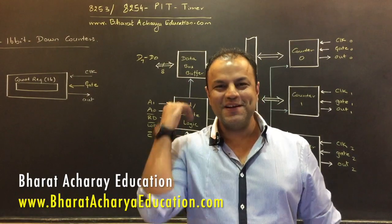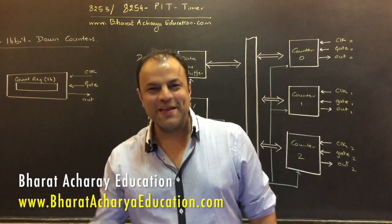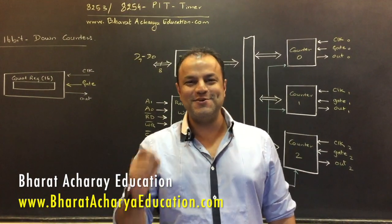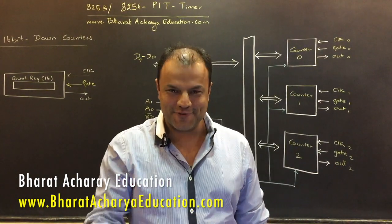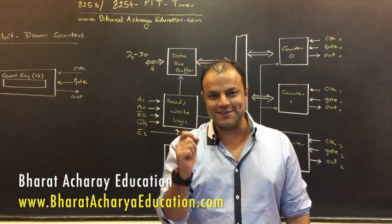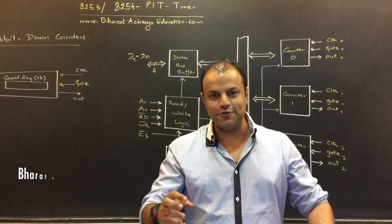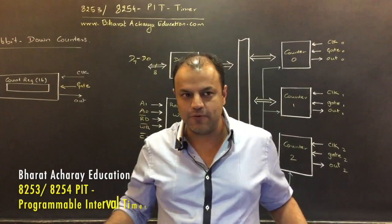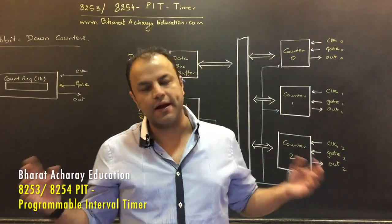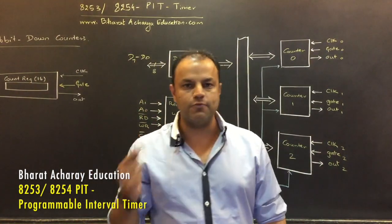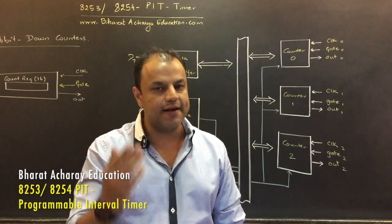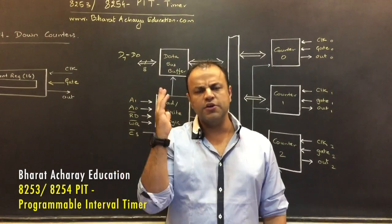I am Bharat Acharya. Welcome to our new video. In today's video, we are learning this chip called 8254 Programmable Interval Timer. It's a timer chip. 8254 is the bigger one. The smaller version of it is 8253, which is practically the same except for the lack of one command called the readback command. That's the additional facility 8254 has.